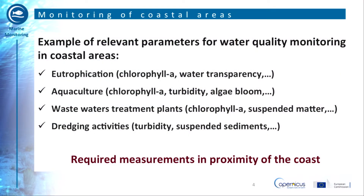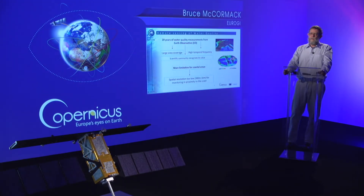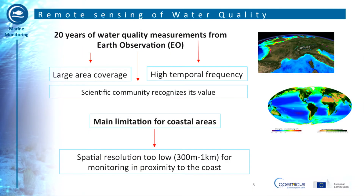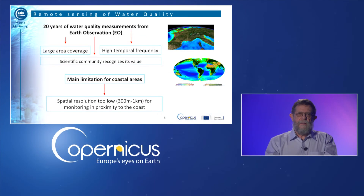A key element common to all these examples is that measurements are very frequently required in close proximity to the coast, ideally right up to the shoreline. Remote sensing of water quality from satellite is a practice which has been undertaken for more than 20 years. It can provide reliable results with large area coverage and high temporal frequency. However, currently such techniques are limited in coastal areas since the best spatial resolution levels available are too coarse to obtain meaningful measurements in proximity to the coast — in the order of 300 metres to a kilometre.